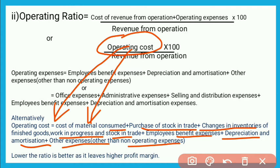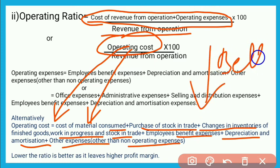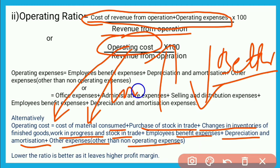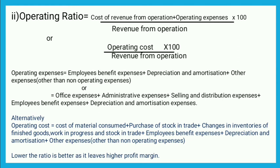इस ratio में जितना lower ratio आएगा, उतना ही company के लिए profit बचा रहेगा — higher profit margin छोड़ेगा। क्योंकि अगर ratio higher आया तो इसका मतलब operating cost काफी बढ़ गई, तो profit कम मिलेगा। इसीलिए कहा जाता है: lower the ratio, better the position — means more profit margin. Higher ratio में low profit margin होगा। Management को ध्यान रखना है कि operating ratio कम से कम होना चाहिए तभी business को ज्यादा profit होगा।